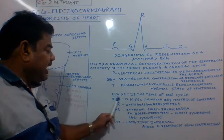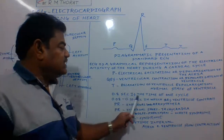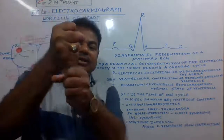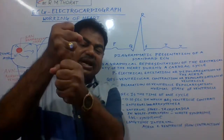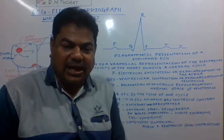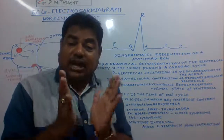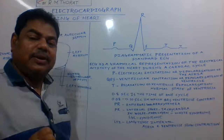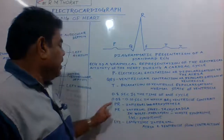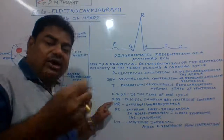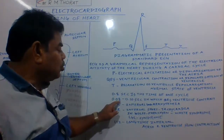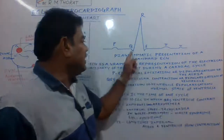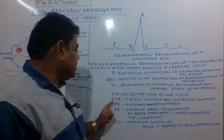One cardiac cycle takes 0.8 seconds — the complete contraction and relaxation. When the auricle contracts, the ventricles relax, and when the ventricles contract, the auricles relax. The ventricular contraction and relaxation (QRS) takes approximately 0.08 to 0.10 seconds to complete.